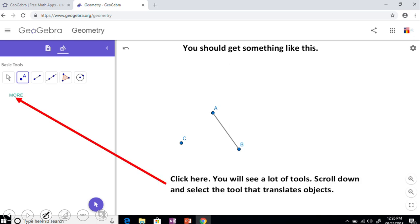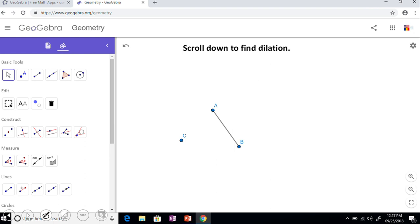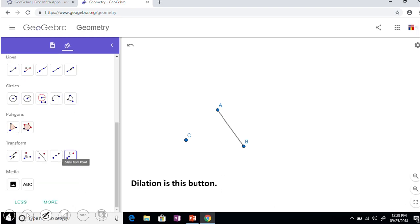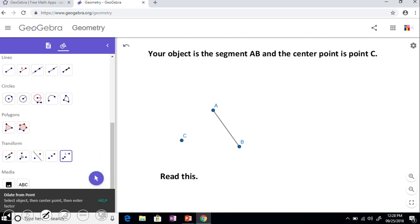Click the more button and obviously you get a lot more tools. You're going to scroll down until you see this choice which is where transform is, and that one says dilate from points. So we're going to do a dilation with respect of a center of dilation which is a point. It gives you some information how to do the dilation: select the object, then center point, and enter a factor.